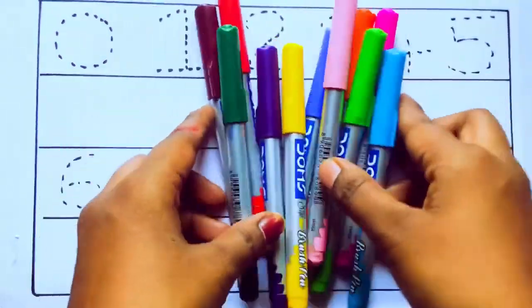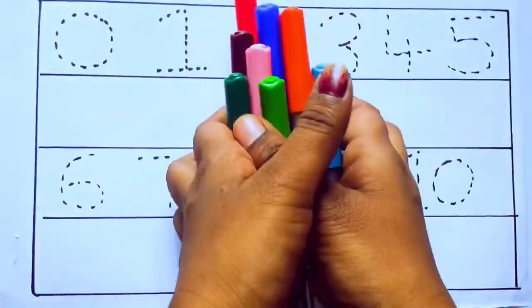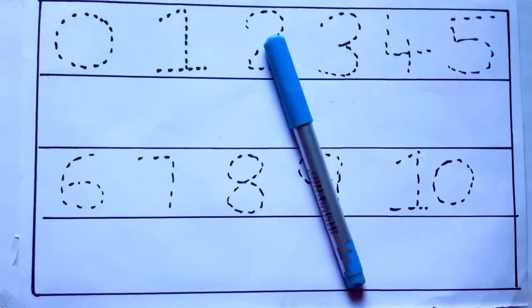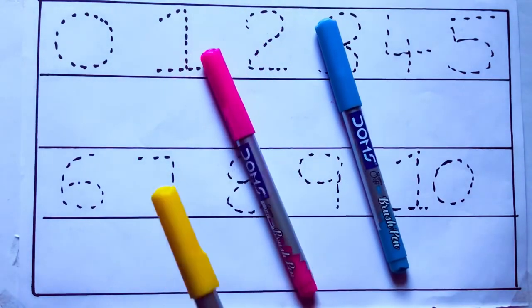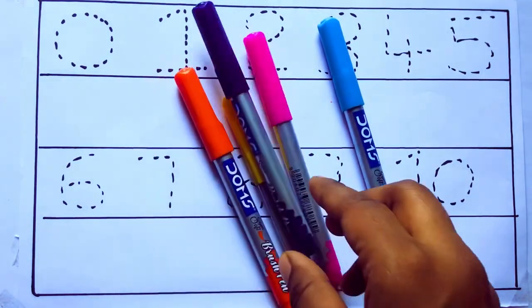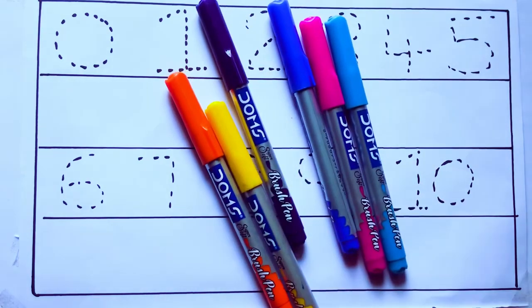Let's learn some colors. These are all the color pencils. Let's learn the names. Sky blue color, pink color, yellow color, orange color, violet color, blue color.